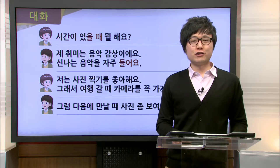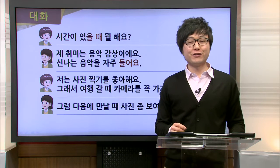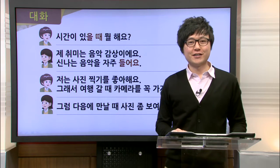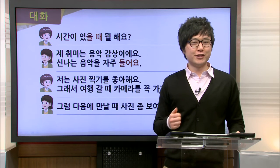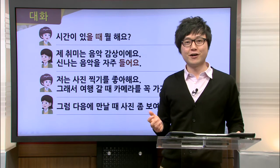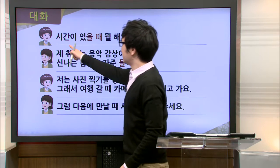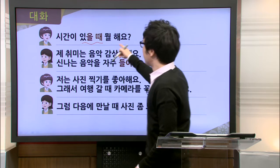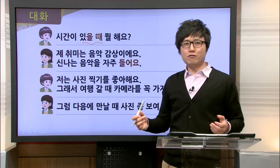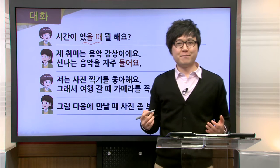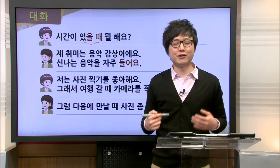Now let's take a closer look at the dialogue. In today's dialogue, Jimin is talking with her friend in the park about each other's hobbies. Jimin starts off by asking: 시간이 있을 때 뭘 해요? — or, what do you do when you have time? So what do people usually do in their free time? They like to do things they enjoy — she's asking about her hobby.